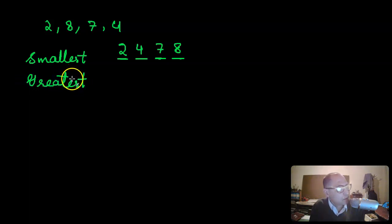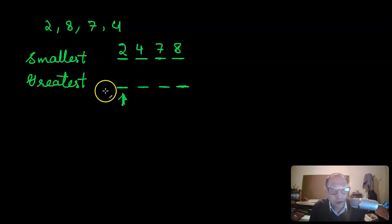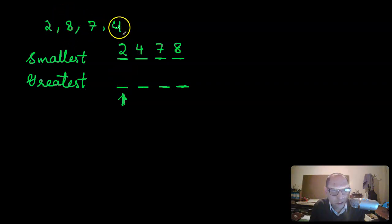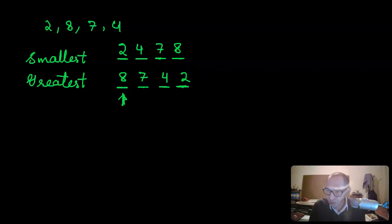For the greatest four-digit number you can make with these four digits, you want to make the largest place value as large as possible. So I choose the largest digit — the eight — put it first, then the next largest is a seven, then four, then two. So the smallest number would be two thousand four hundred seventy-eight, and the greatest would be eight thousand seven hundred forty-two.